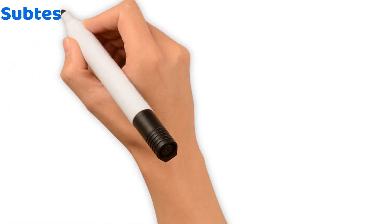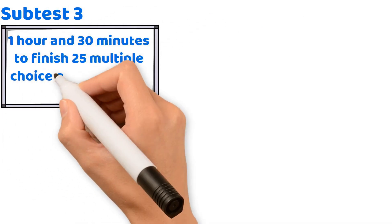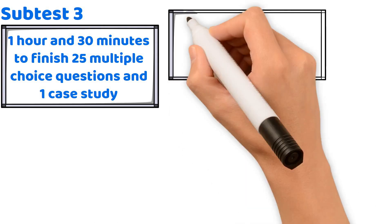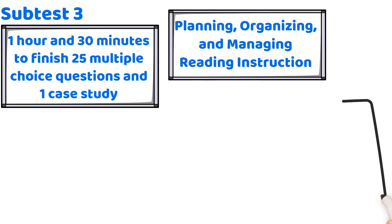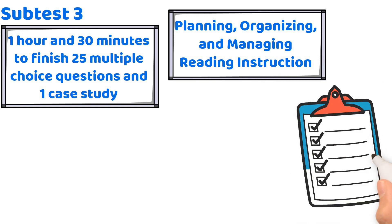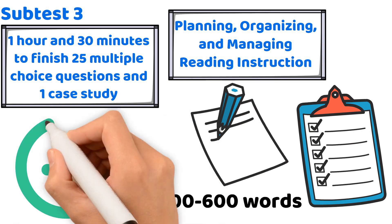Finally, there's Subtest 3. This test gives you 1 hour and 30 minutes to finish 25 multiple-choice questions and 1 case study. This section focuses on planning, organizing, and managing reading instruction. You'll work through 25 multiple-choice questions and a case study response between 300 to 600 words, covering all domains.